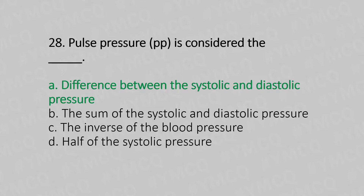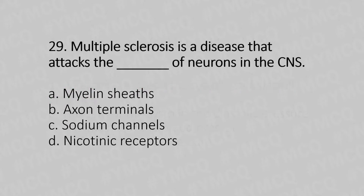Question 29: Multiple sclerosis is a disease that attacks the dash of the neurons in the CNS. Option A: myelin sheath. Option B: axon terminals. Option C: sodium channels. Option E: nicotinic receptors.